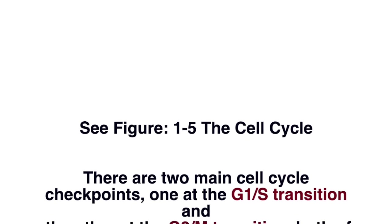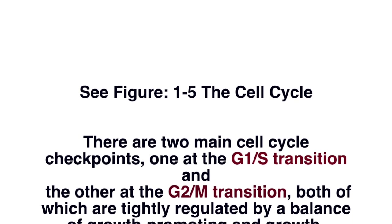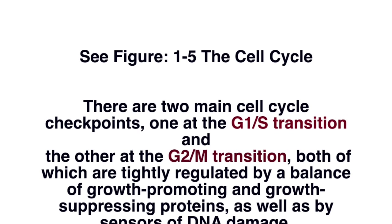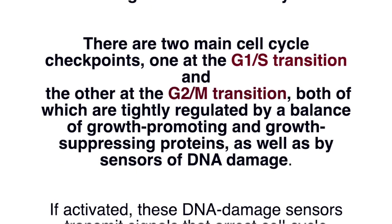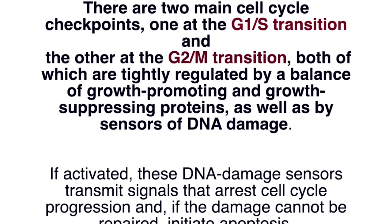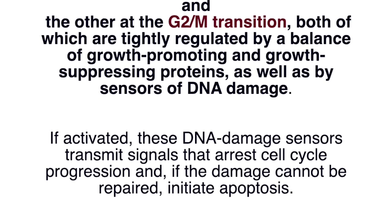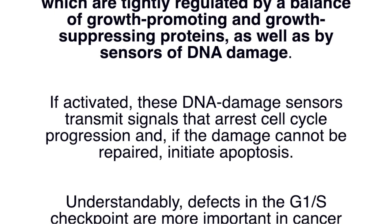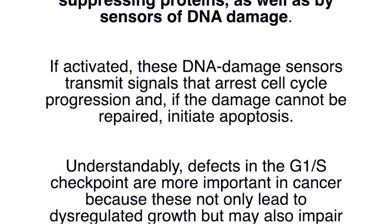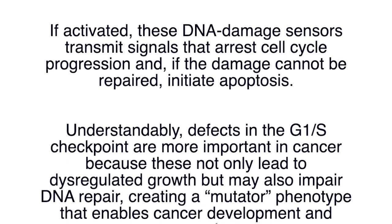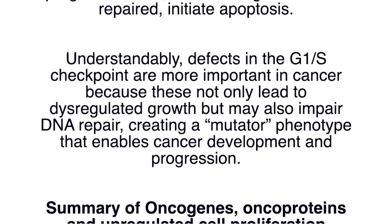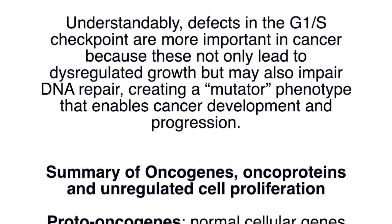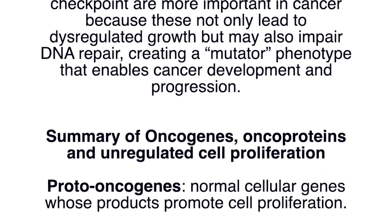There are two main cell cycle checkpoints: one at the G1-S transition and the other at the G2-M transition. Both are tightly regulated by a balance of growth-promoting and growth-suppressing proteins, as well as by sensors of DNA damage. If activated, these DNA damage sensors transmit signals that arrest cell cycle progression, and if the damage cannot be repaired, initiate apoptosis. Defects in the G1-S checkpoint are more important in cancer because they not only lead to dysregulated growth but may also impair DNA repair, creating a mutator phenotype that enables cancer development and progression.